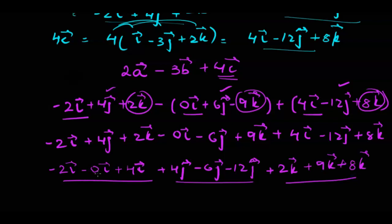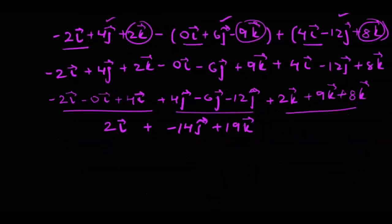So when we simplify this minus 2 minus 0 plus 4 gives us 2i. 4 minus 6 is minus 2 minus 12 is negative 14j. 2 plus 9 is 11 plus 8 is 19k. So the final answer in Cartesian form is 2i minus 14j plus 19k. If you're supposed to write this answer in component form we just have to put it like this. And this is how we multiply scalars with vectors.